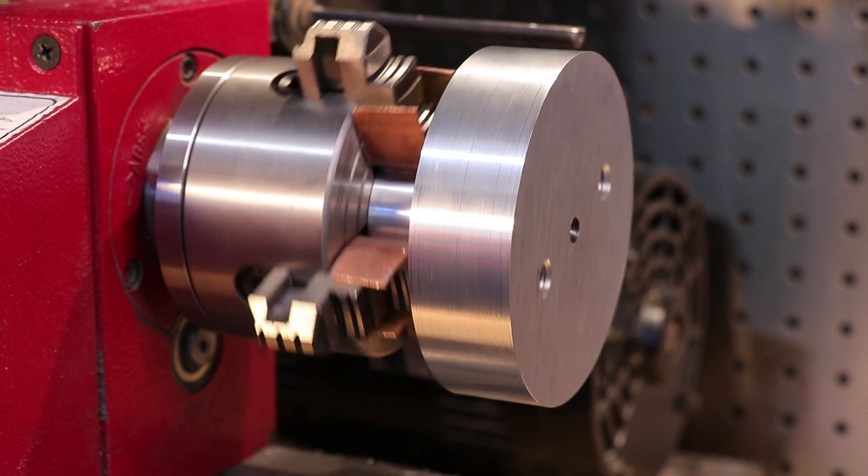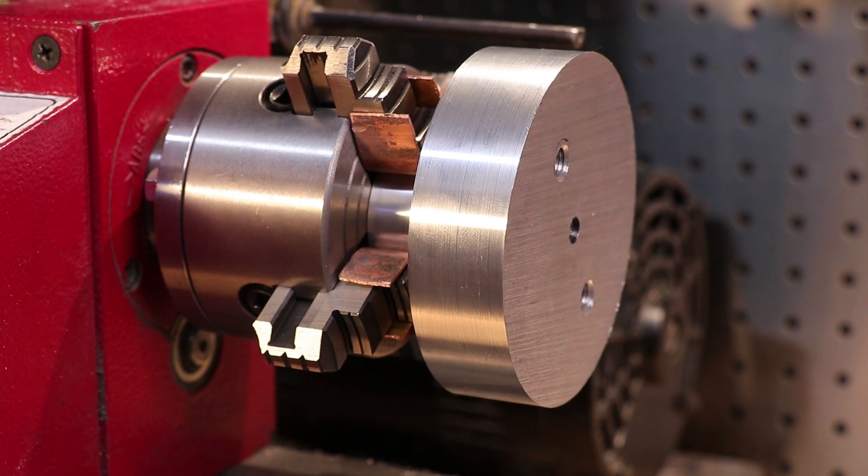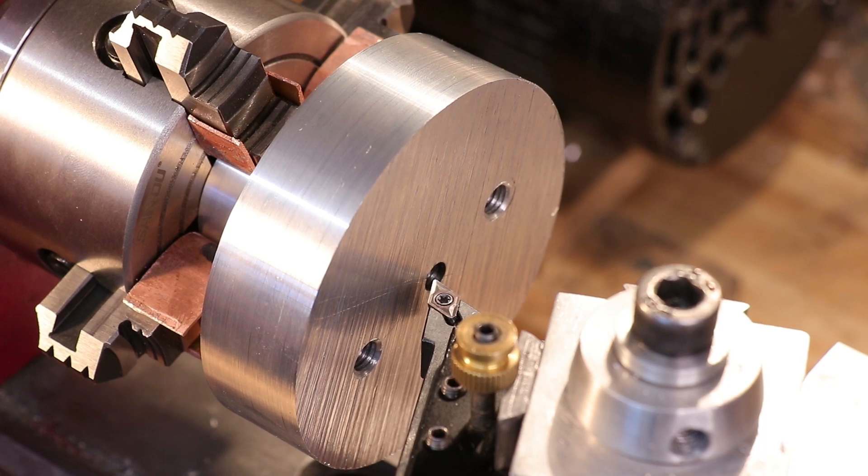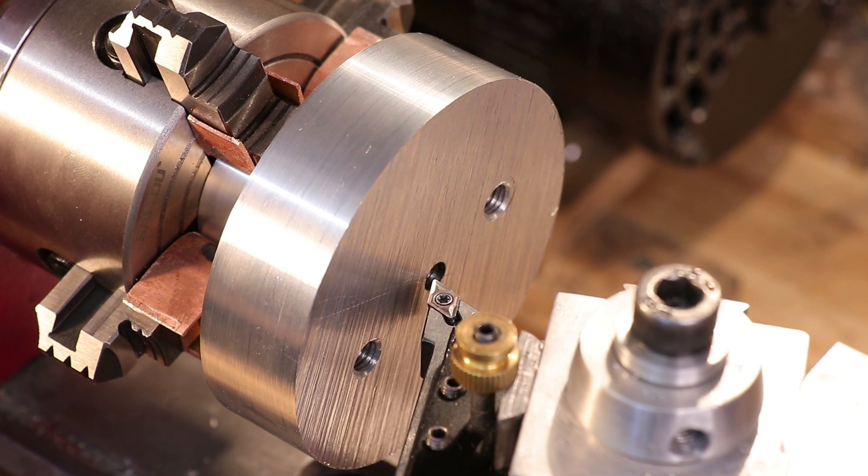I've gone and turned the part around and chucked it in the four-jaw with some copper jaw liners to prevent any marring on the soft aluminum. The first operation that I need to do is face it and then take it down to final dimension.